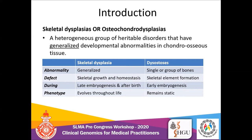The defect in dysostosis is in the skeletal element formation that occurs during early embryogenesis or organogenesis. The phenotype seen at birth usually remains static and unchanged in dysostosis. In contrast, in skeletal dysplasia the defect affects skeletal growth and homeostasis, so the phenotype usually evolves and changes throughout life. Over time this distinction has become blurred and dysostosis are more often considered under skeletal dysplasia.